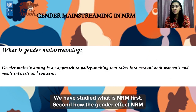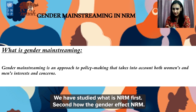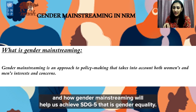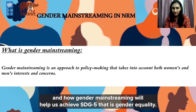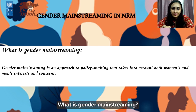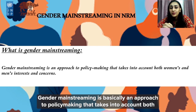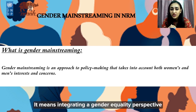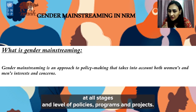So far we have studied what NRM is and how gender affects NRM. Now we'll look at what gender mainstreaming is and how it will help us achieve SDG 5, that is gender equality. Gender mainstreaming is an approach to policy making that takes into account both men and women, their interests and concerns. It means integrating a gender equality perspective at all stages and levels of policies, programs, and projects.